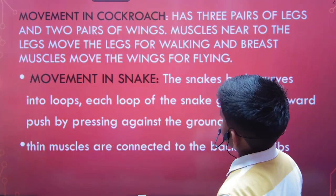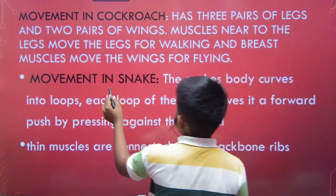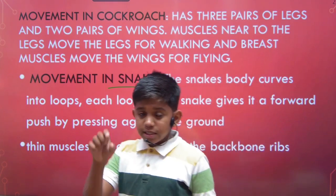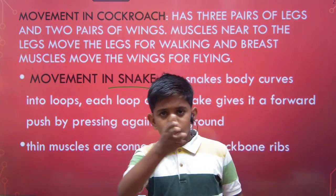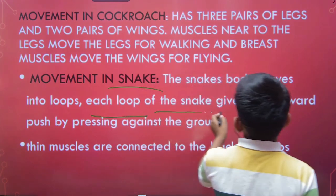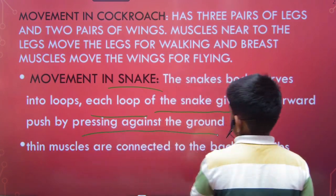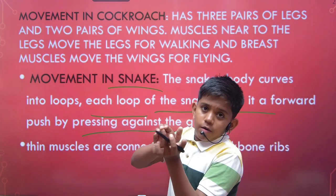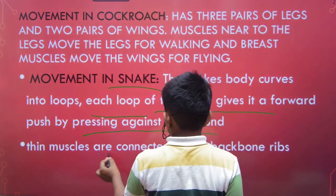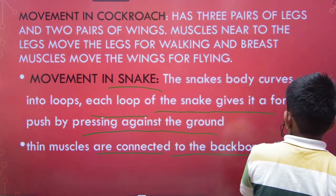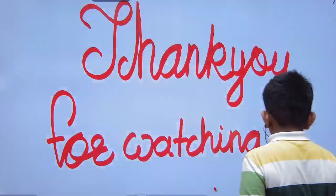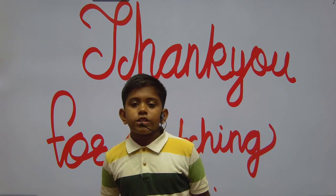Next, movement in snake: the snake's body curls into loops — zigzag loops. Each loop of the snake gives a forward push by pressing against the ground. The snake has a backbone and ribs connected to muscles, which enable this movement.